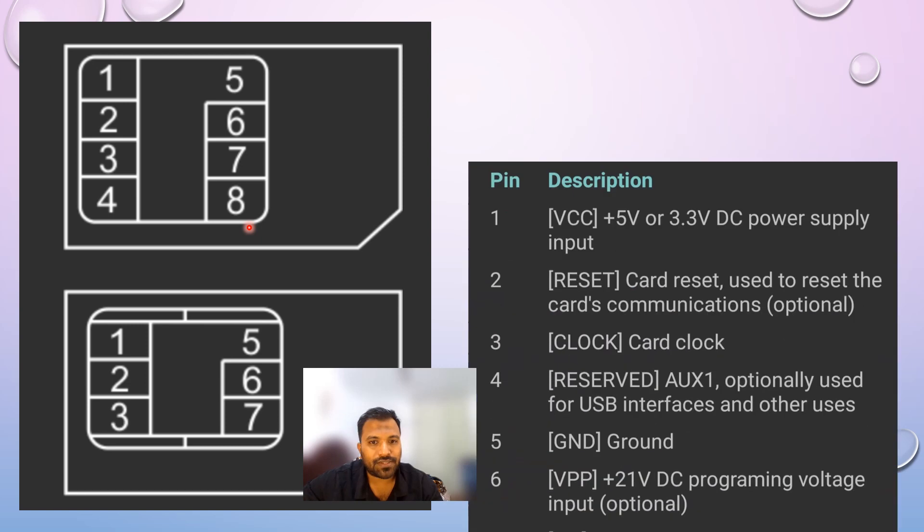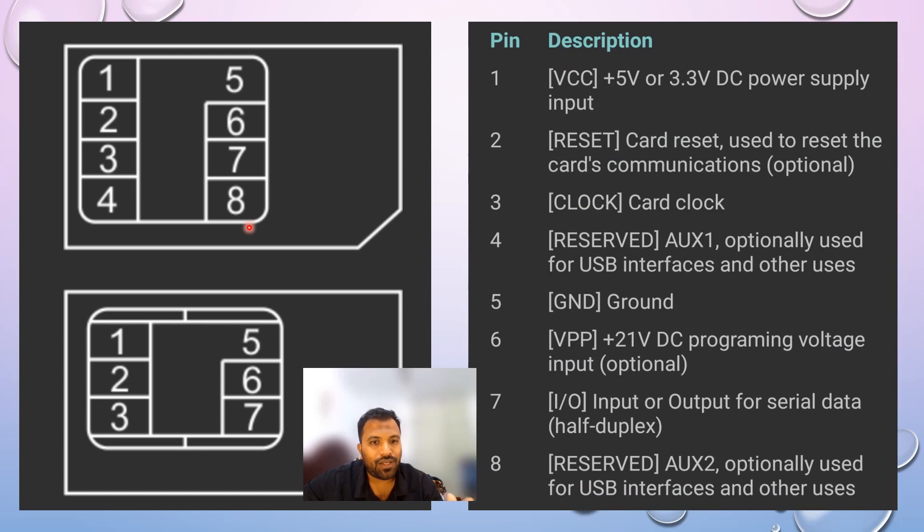4 and 8 are the auxiliary USB interfaces. These are the reserve. Okay, so rest all the 1, 2, 3, and 5, 6, 7 are the same representation. So I hope you understand the video.